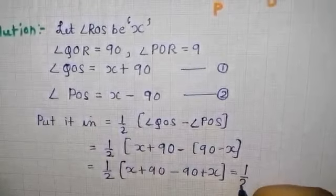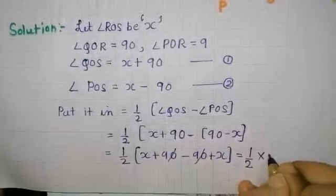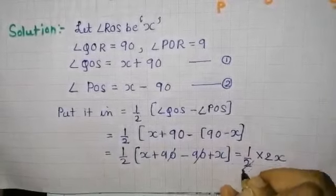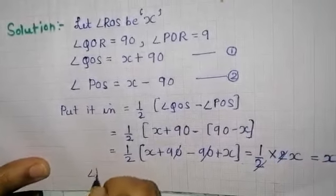90 minus 90 is zero, so 1/2 times 2x. x plus x is 2x, which simplifies to x.